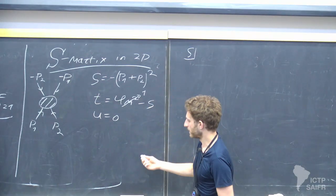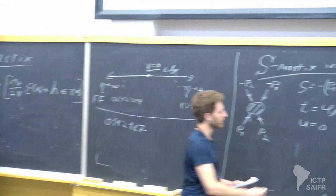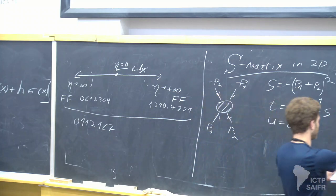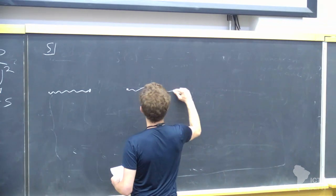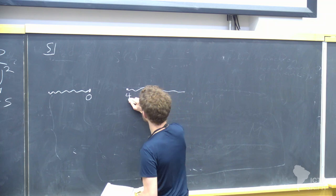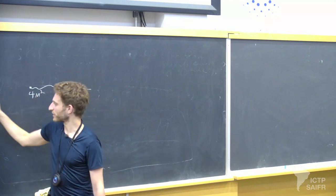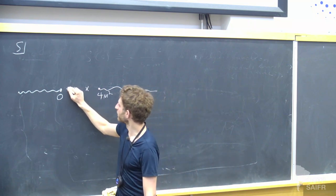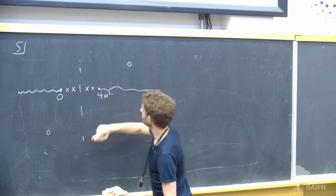Looking at this as a function of S: if I'm looking at the out-state of two particles, it's some function S times the in-state of two particles plus other states. The analytic structure has branch cuts starting at 4m squared and branch cuts ending at zero. There could be poles here corresponding to stable particles in the theory — they should come in pairs because of crossing symmetry. And we could have zeros which by crossing and real analyticity must also come in specific pairs.